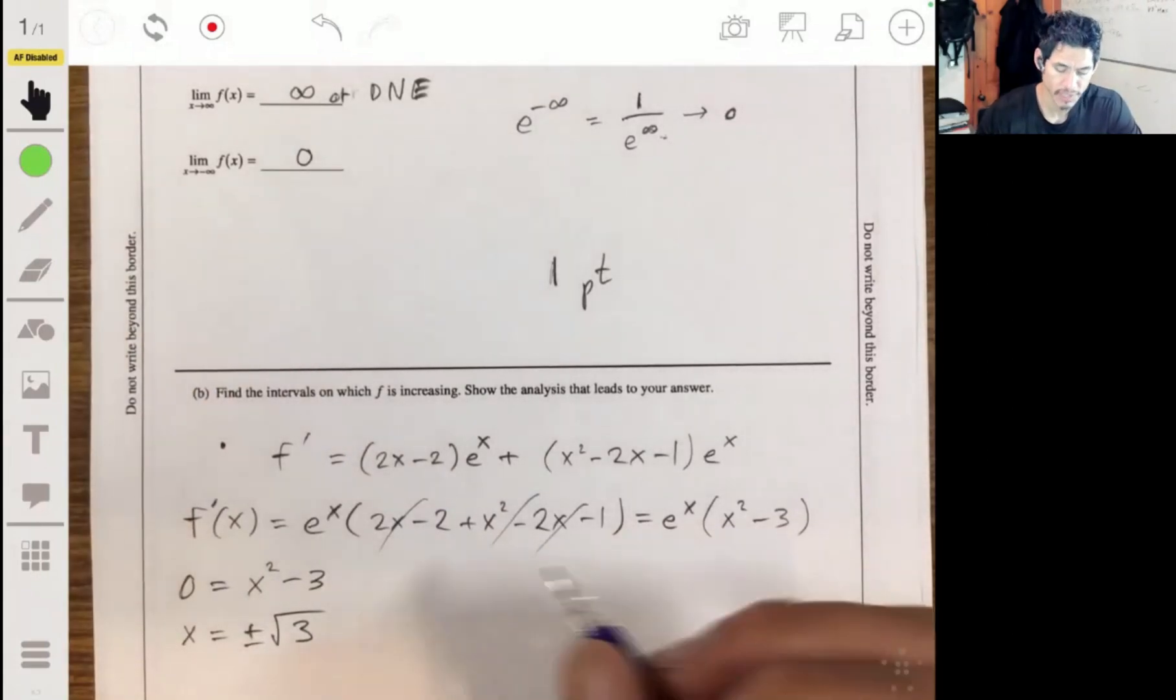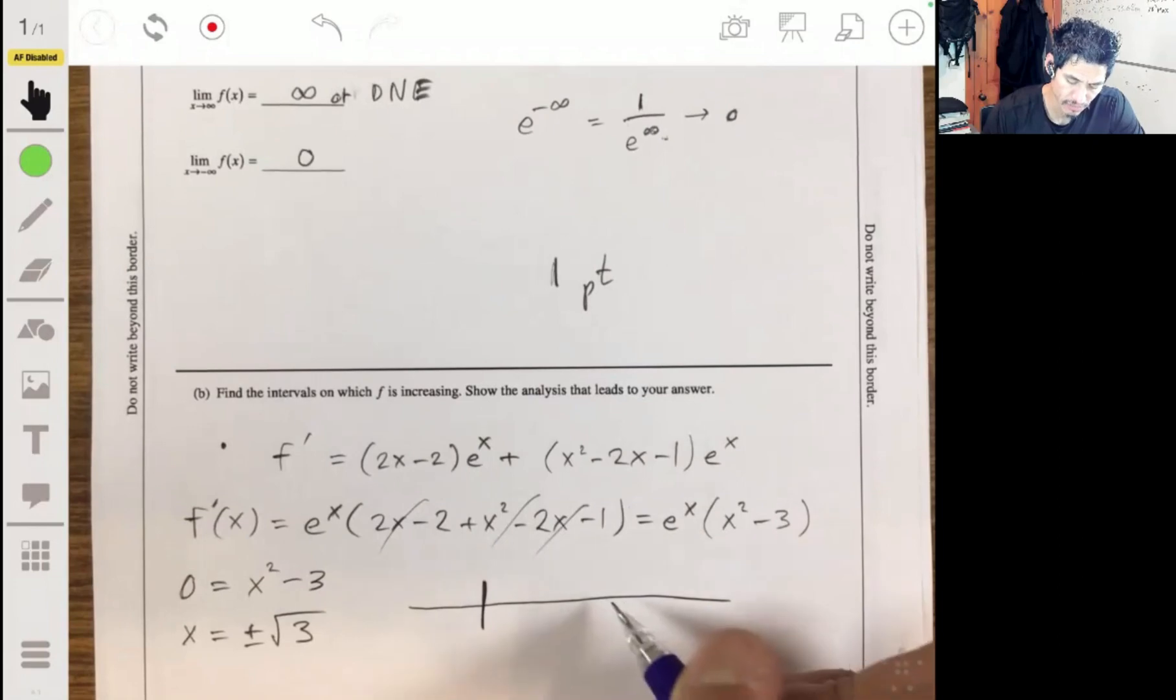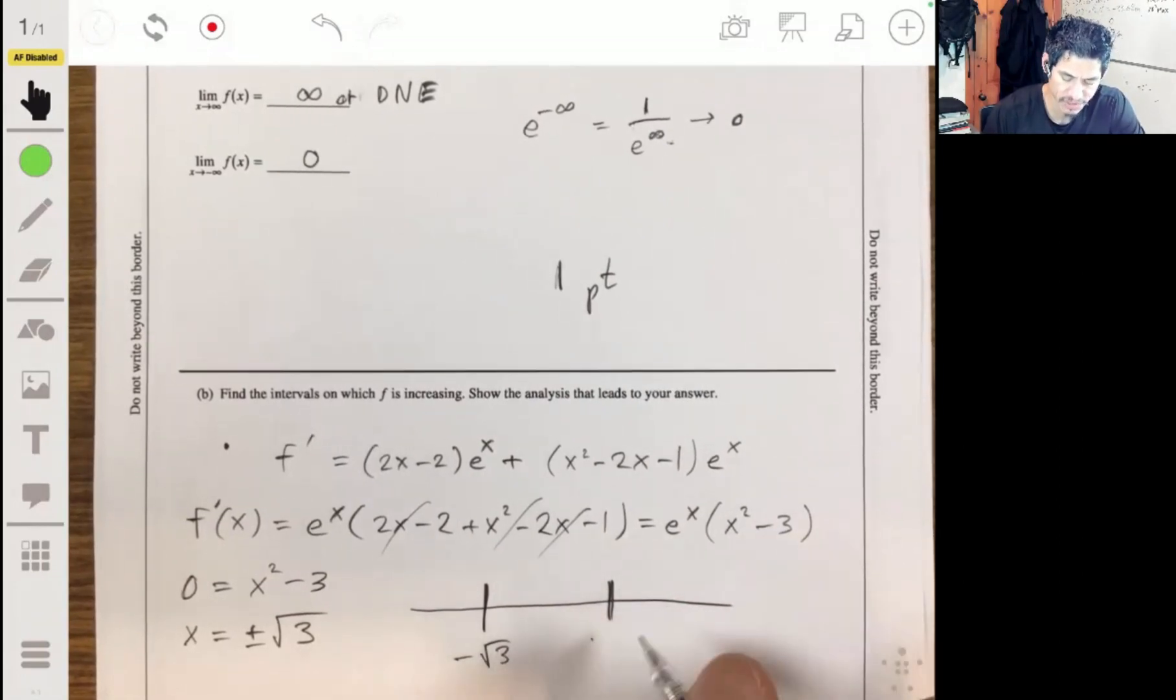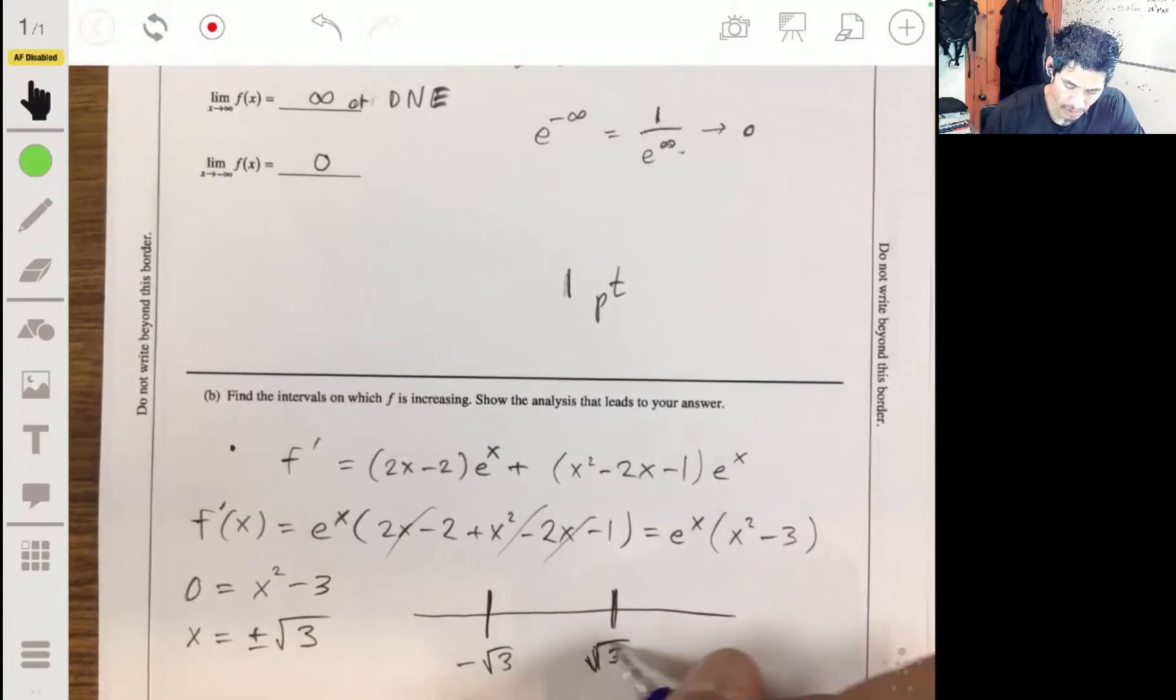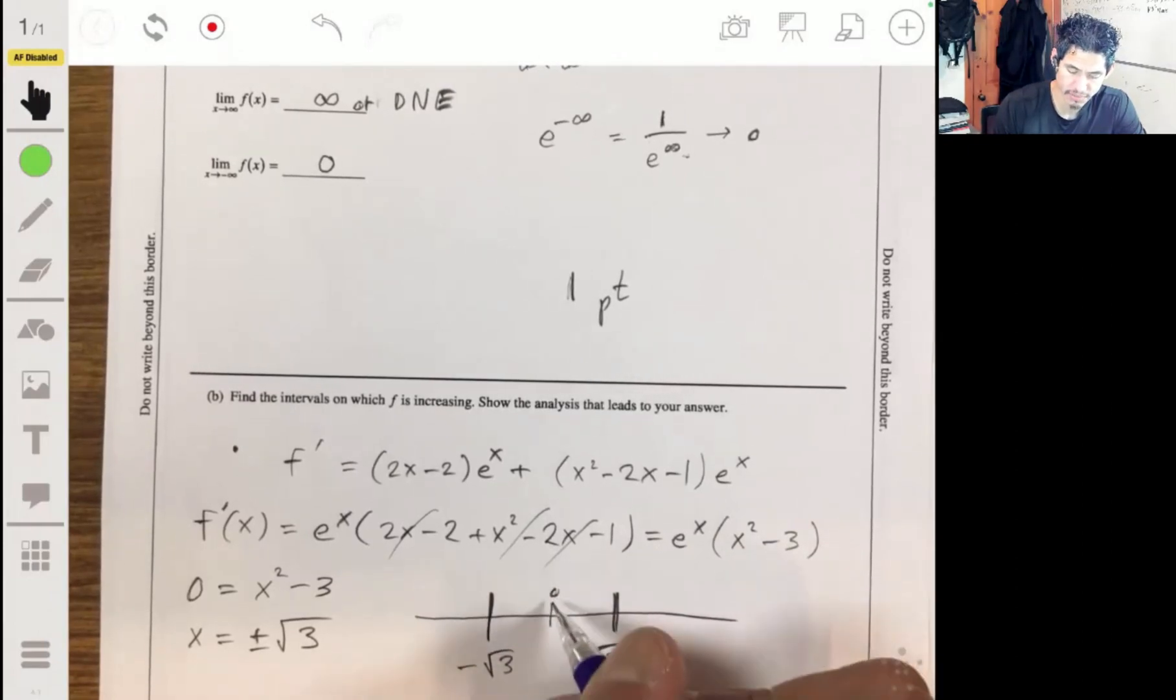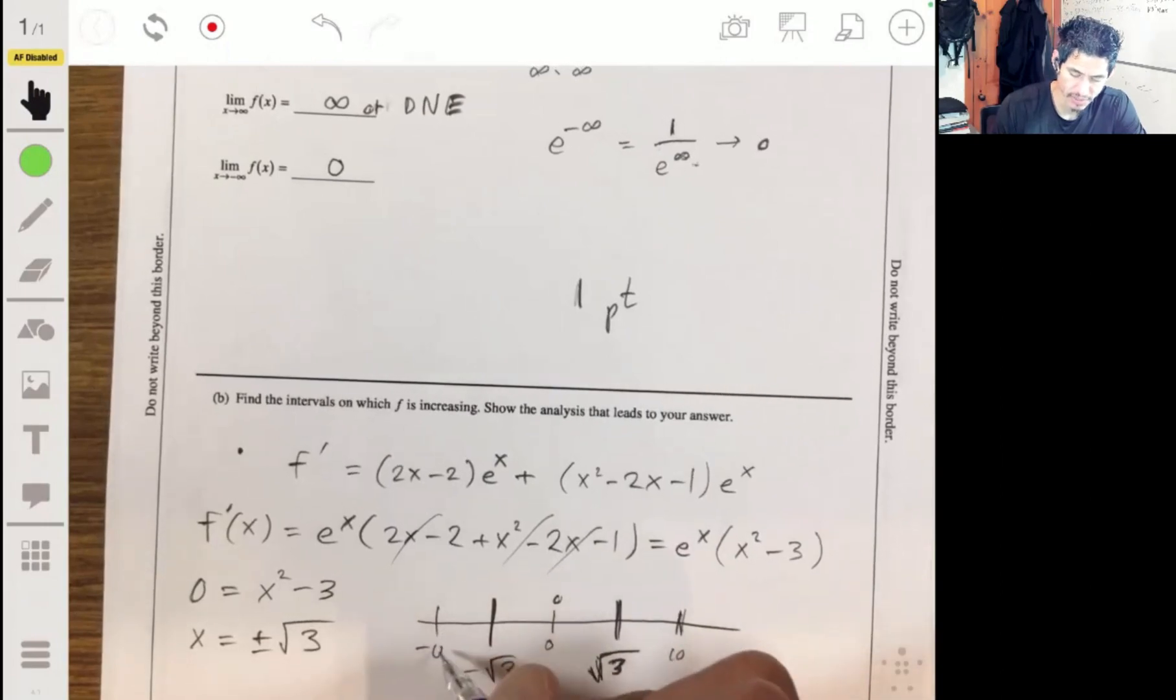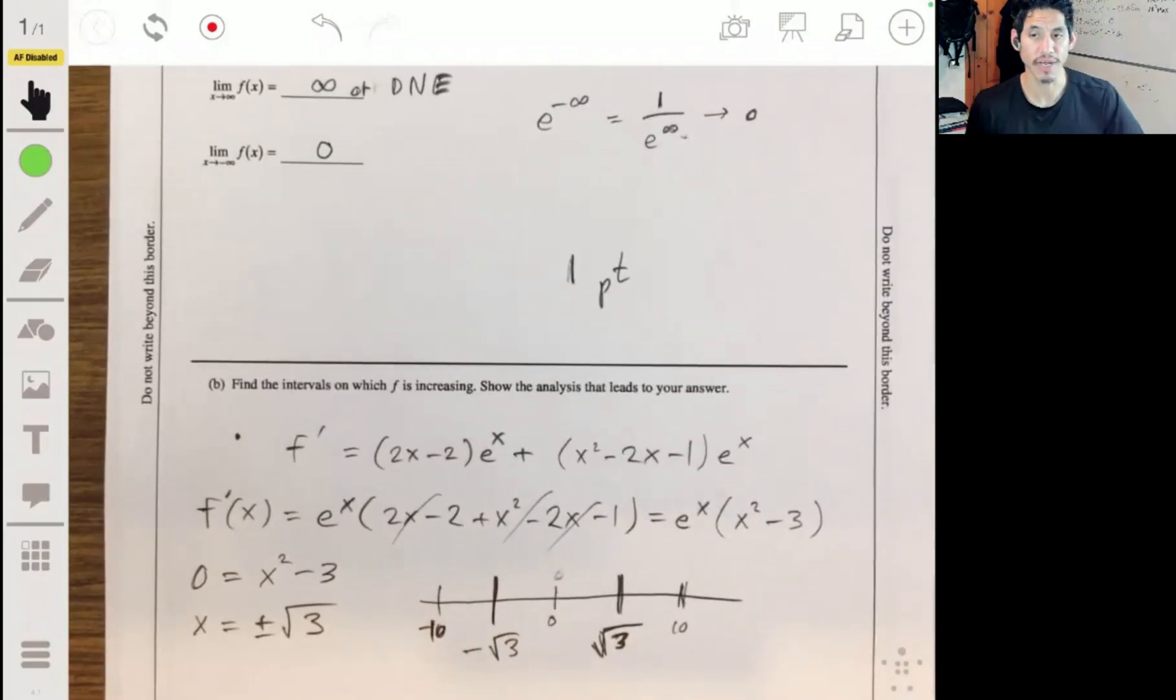So then these are our critical points that we want to check. And we want to check the intervals is what I mean. So negative square root of 3 and positive square root of 3, we're going to divide our intervals by. And let's check numbers in these three areas. So let's check 0, let's check like 10, let's check negative 10. Remember, we just need to know the sign. We don't need to know the exact value because we want to just understand if the function's increasing or decreasing.